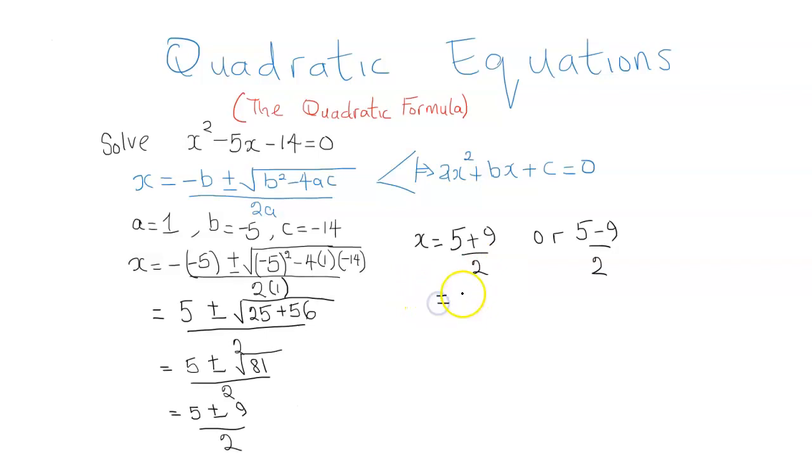So this is going to be equal to 5 plus 9 over 2 or 5 minus 9 over 2. So this is where the positive and negative comes into play. So 5 plus 9 is 14, that's over 2. 5 minus 9 is a negative 4 over 2. So therefore we see that the solutions of this quadratic equation is x equal to 7 or x equal to negative 2. And we find that this tallies with what we got when we solved this same problem using the factor method.